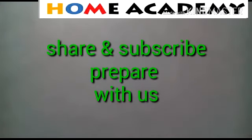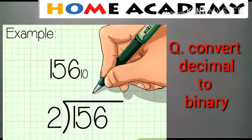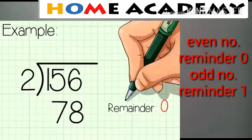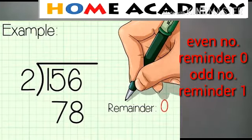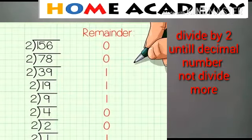Now we will convert decimal to binary. The decimal number is 10-based. What we have to do is divide by 2. If we divide an even number the remainder is 0, and if we divide an odd number, the remainder is 1. We keep dividing by 2 until the decimal number cannot be divided further.